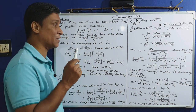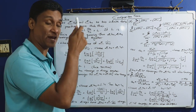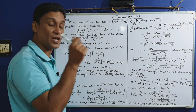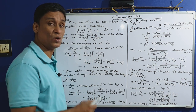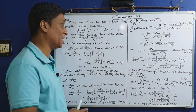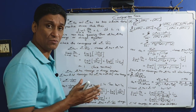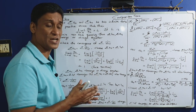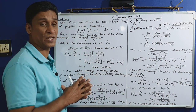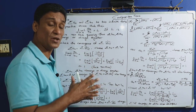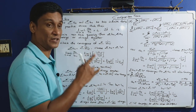The limit as n tends to infinity of a_n by b_n equals L. If L is a finite nonzero quantity — meaning finite and nonzero — then sigma a_n and sigma b_n converge or diverge together. That is, if sigma a_n converges then sigma b_n converges, and if sigma a_n diverges then sigma b_n diverges.